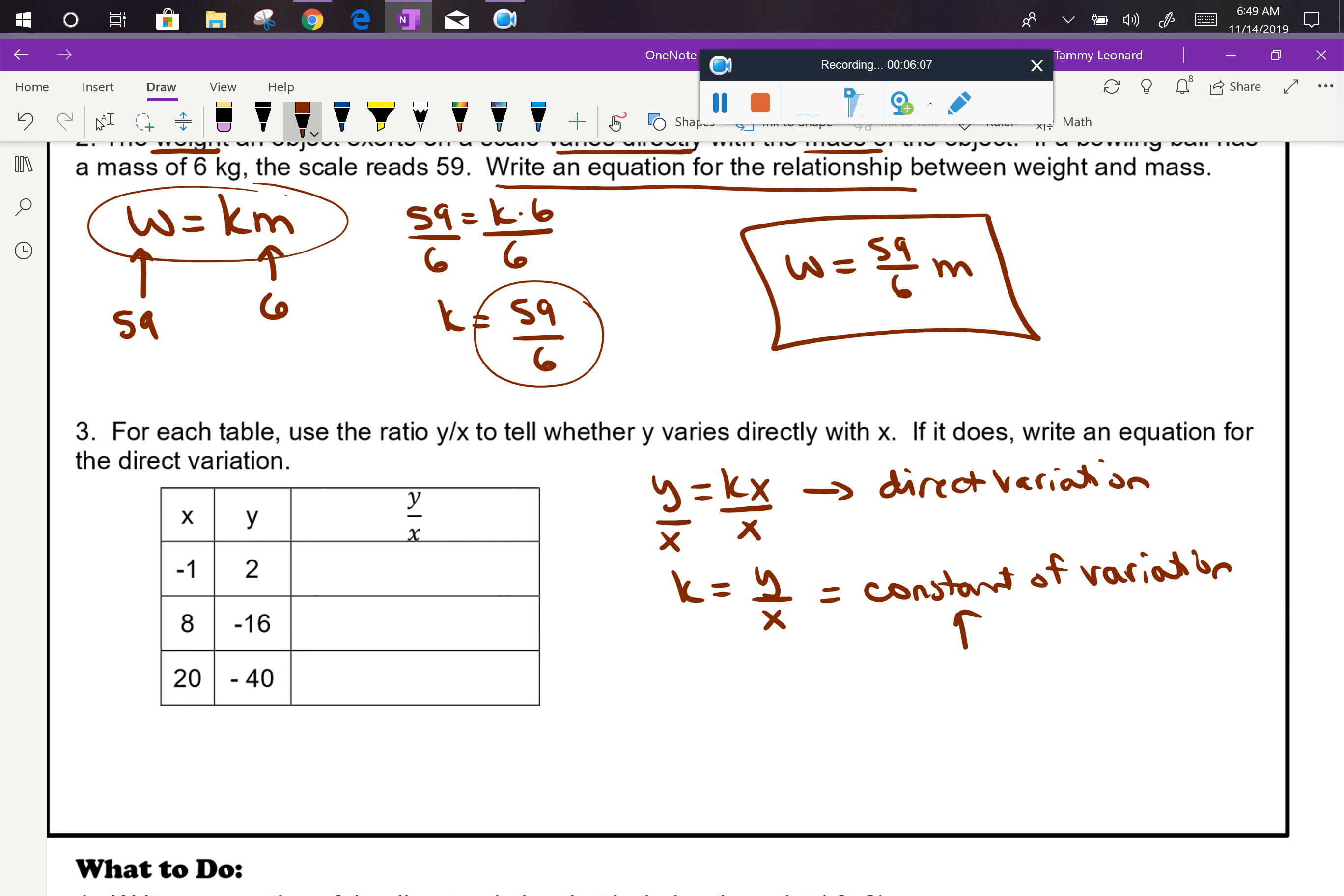So we're going to test this table to see if it represents a direct variation. We want to see if y over x, which is k, is constant. So 2 divided by negative 1 equals negative 2. I need to check the next one.